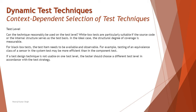For black box testing, the test item needs to be available and observable. If you don't have the specification listed in detail, you will not be able to apply black box testing techniques. For example, testing an equivalence class of a sensor in the system test may be more efficient than in component tests, because you have everything connected to the environment and can see the behavior of that input. If a test design technique is not suitable at one test level, the tester should choose a different test level in accordance with the test strategy, because at any point in time you can minimize test cases to have more effective testing and better confidence.